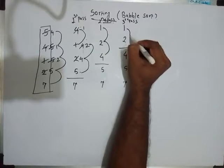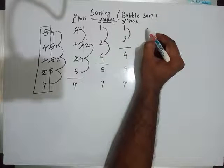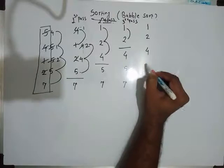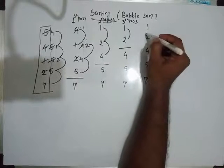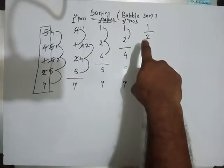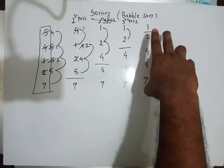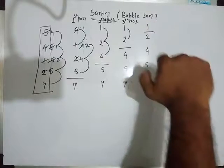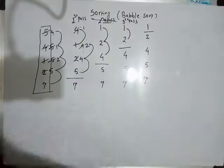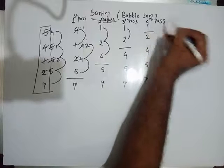We compare 1 with 2: 1 is less than 2, so we don't swap. Only one comparison. At the end of this pass we have 1, 2, 4, 5, 7. We placed the number at its correct place. Now there is only one element left; since all other elements are placed correctly, it must be correctly placed too. This was the fourth pass.